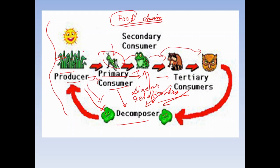The primary producer actually produces food, and the transfer of food is occurring in the following way.